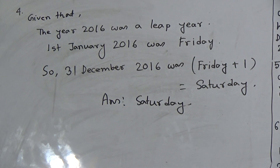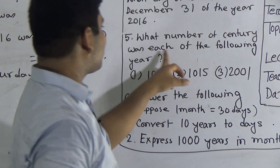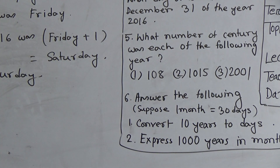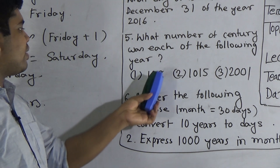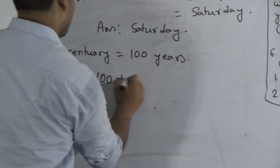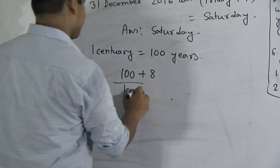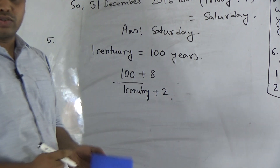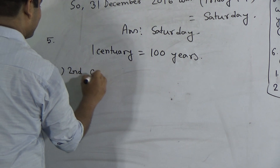Next, question number 5: 'What number of century was each of the following years?' Part one: 1008. We know one century equals 100 years. So 1008 means 1000 plus 8. One century has already completed and another century has come, which means it is the 2nd century.